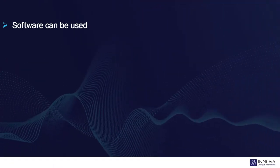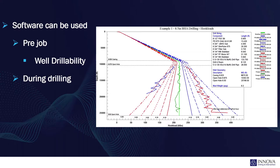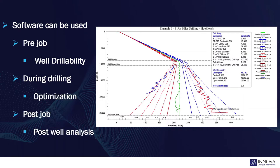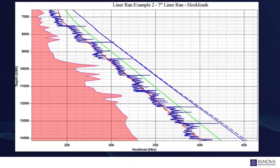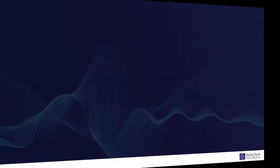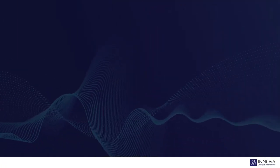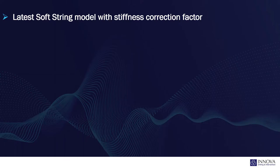Innova's torque and drag software can be used in the planning phase to determine if the well can be drilled, while drilling for optimisation, and post-job for post-well analysis, where real data can be compared against theoretical to back-calculate friction factors, which can then be used to more accurately plan future wells.